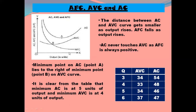When plotting all three curves, first plot the AFC curve, then the AVC curve, and then the AC curve on top as the vertical summation of AFC and AVC. Make sure the distance between AC and AVC decreases as output rises. Also ensure that the minimum point on AC lies to the right of the minimum point of AVC. AC and AVC will not touch each other. These key points must be kept in mind when drawing the curves.